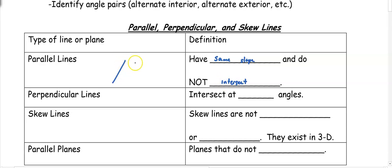For example, parallel lines are going the same direction — they have the same slope and no matter how far you extend them, they're never going to intersect. Perpendicular lines are lines that intersect at right angles, forming 90 degrees. If you have a line with another line crossing it, the little box in the middle means it's a right angle, so those lines are perpendicular.